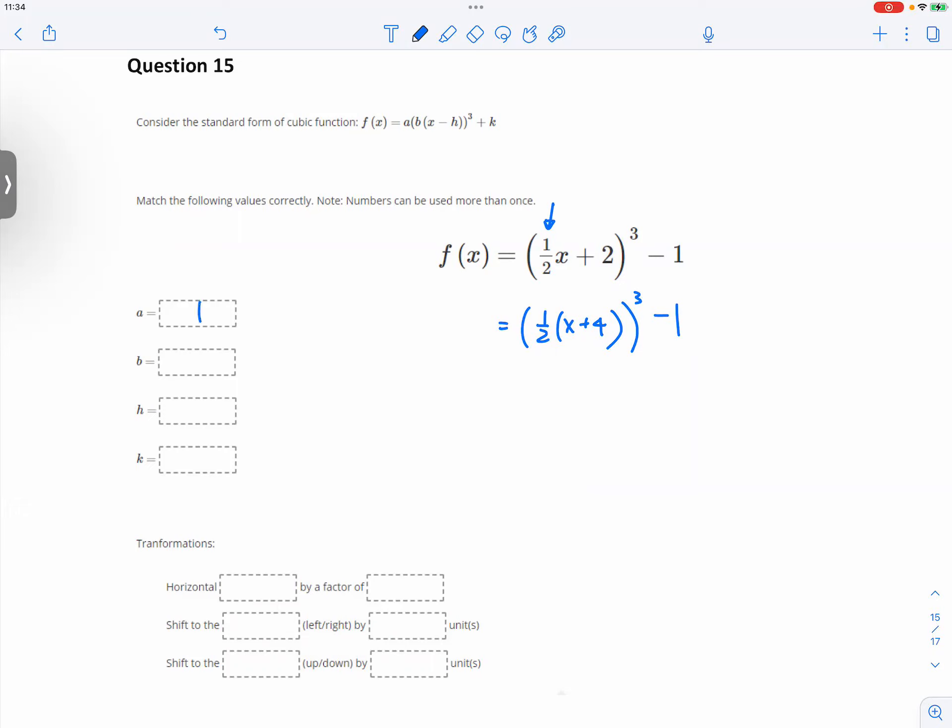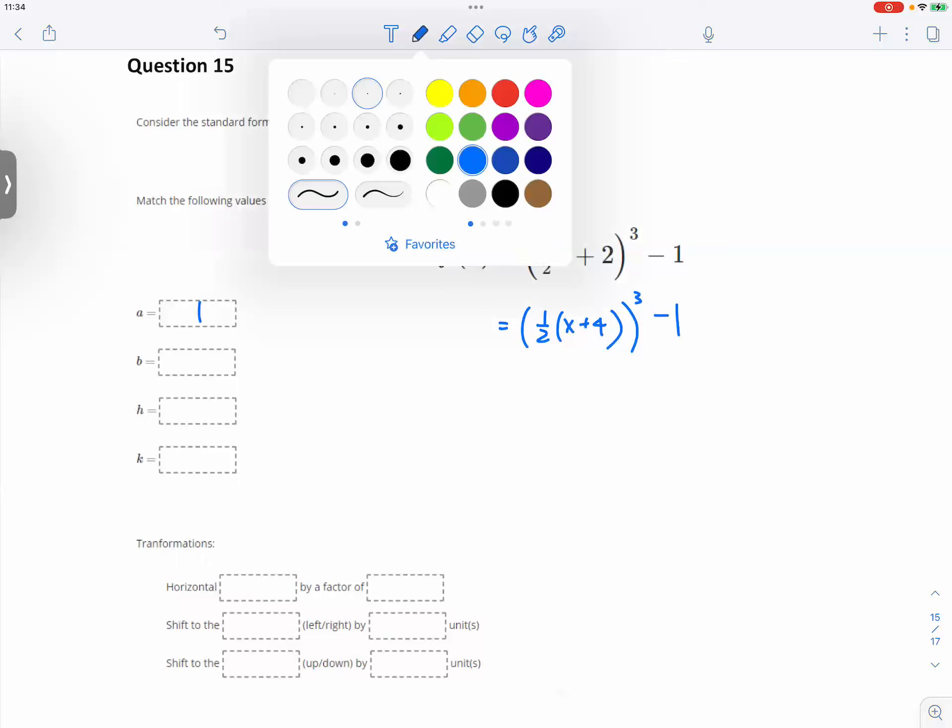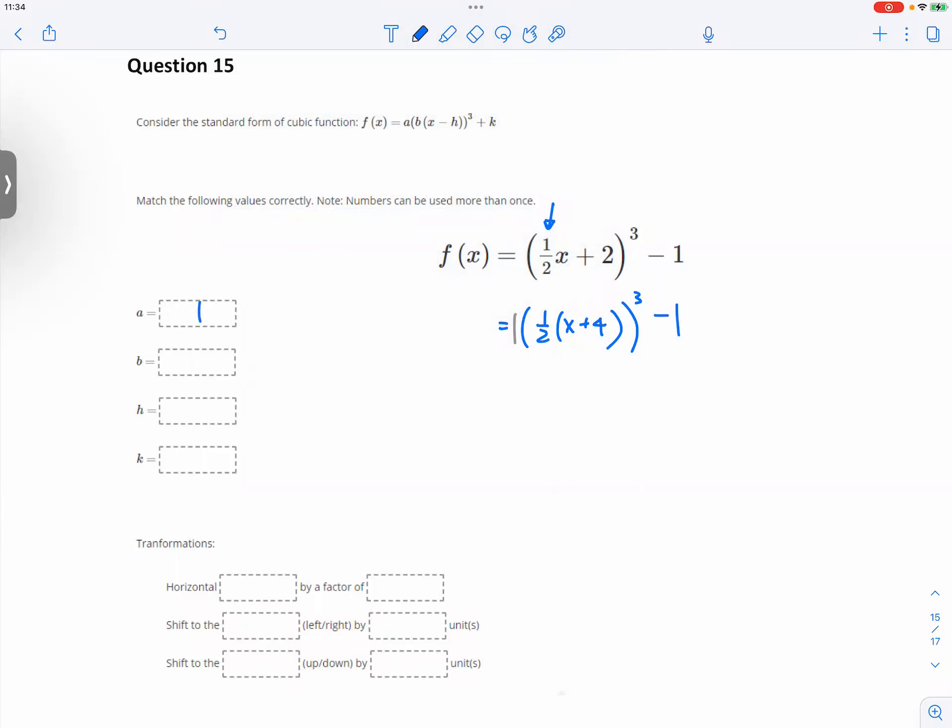So a is going to be 1, because there's no number in front of the parentheses. b is going to be one-half. h, a lot of people miss this one. h is not 4, h is negative 4.